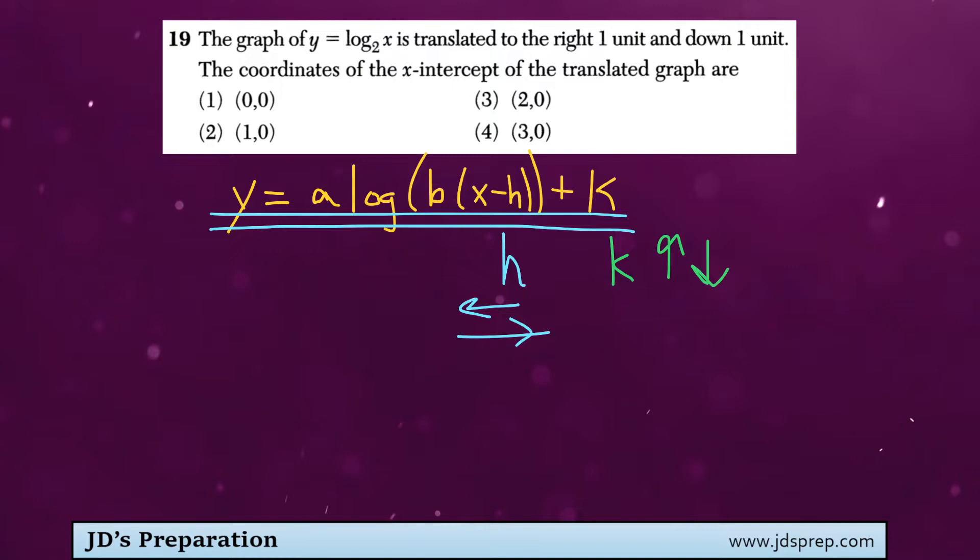So because it is being moved down 1, for example, k has a value of negative 1. And h, since we're moving one unit to the right, h has a value of 1.